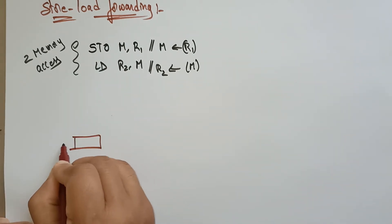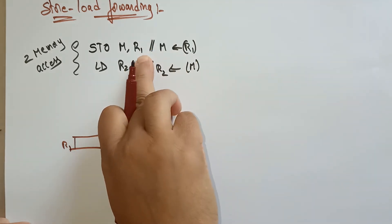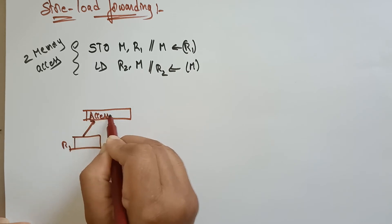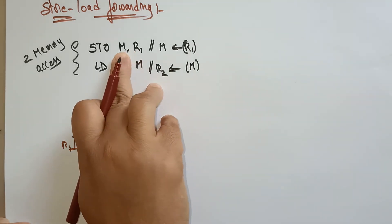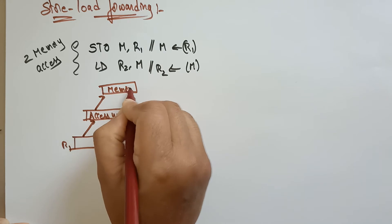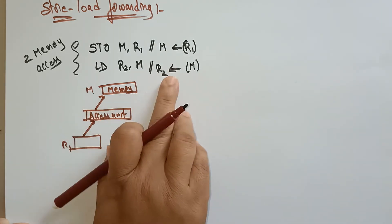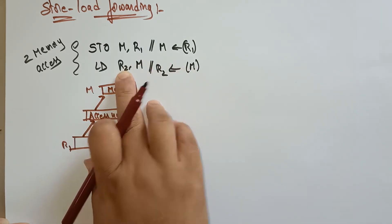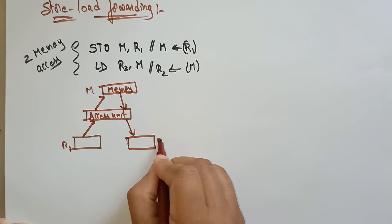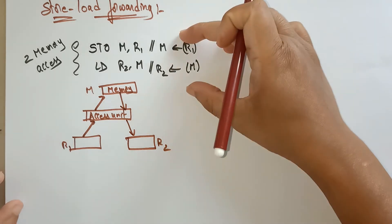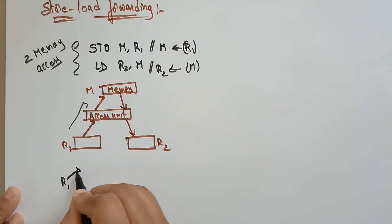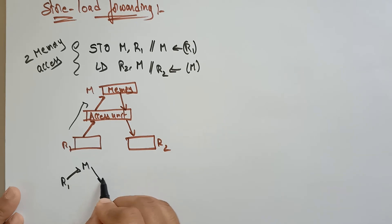Let me explain with a diagram. The r1 register — whatever data is in r1 — first moves to the access unit, then from the access unit it gets stored into memory. Then from memory, the data is sent to the access unit again and loaded into the r2 register. So the data path is: r1 → memory → r2, with two memory accesses occurring.